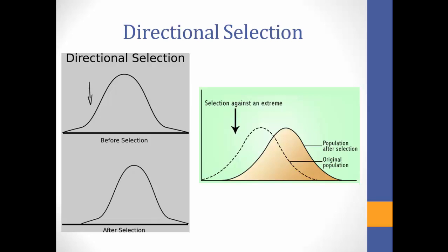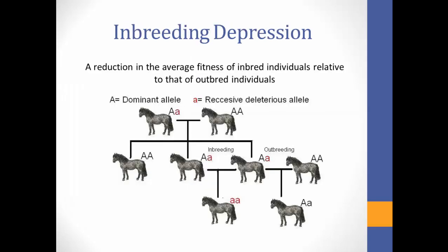Selective breeding eventually leads to directional selection, a type of natural selection which favors an individual at one end of a trait distribution. This causes alleles that are not favored to become less frequent over time. Also, because most plants and animals that are selectively bred are closely related, the offspring usually suffer from inbreeding depression — the reduction of fitness of an individual due to inbreeding, caused by the expression of rare recessive alleles in a homozygous state.